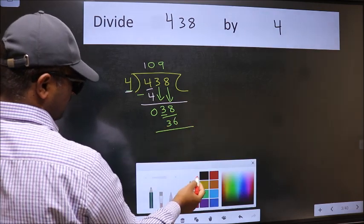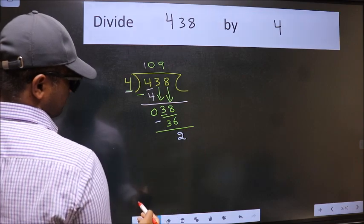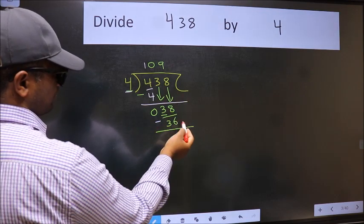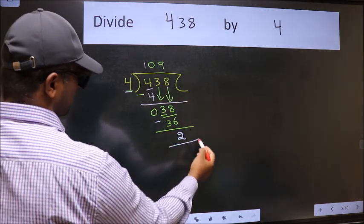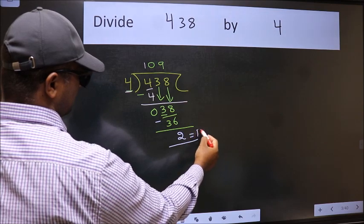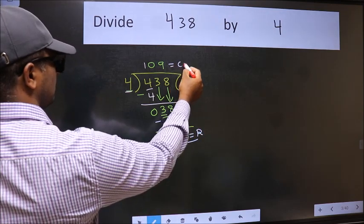Now we should subtract. We get 2. No more numbers to bring it down. So we stop here. This is our remainder and this is our quotient.